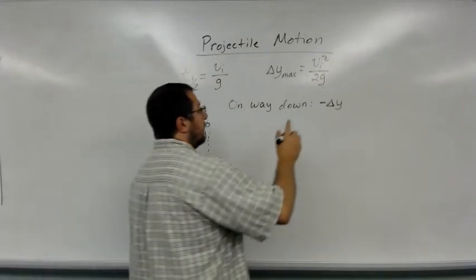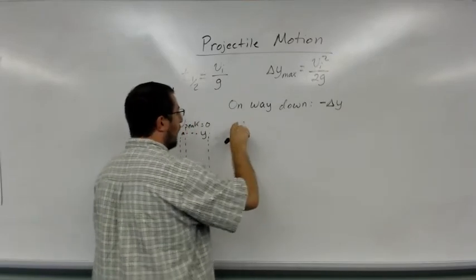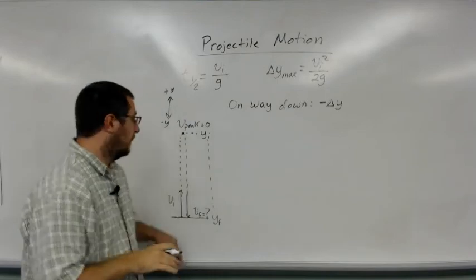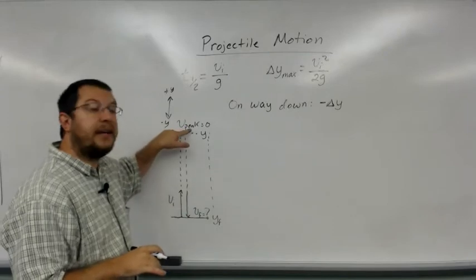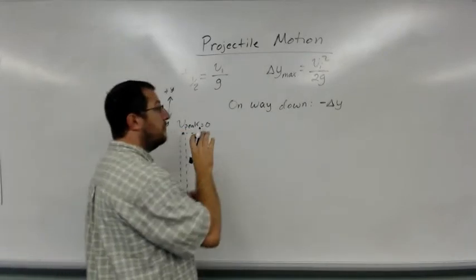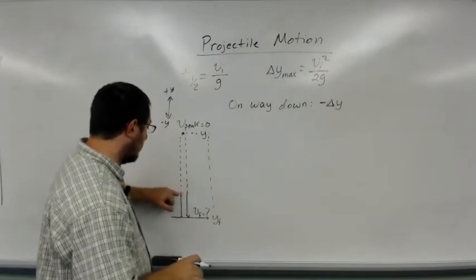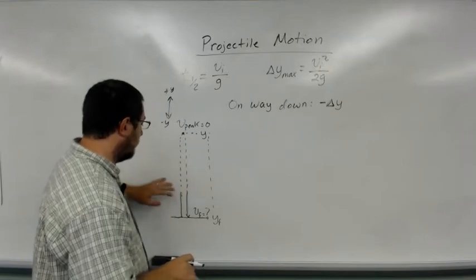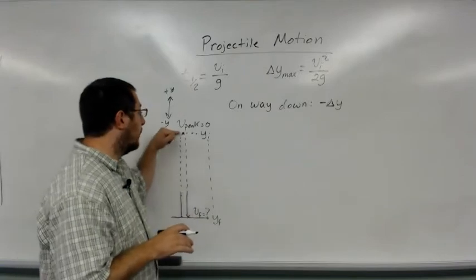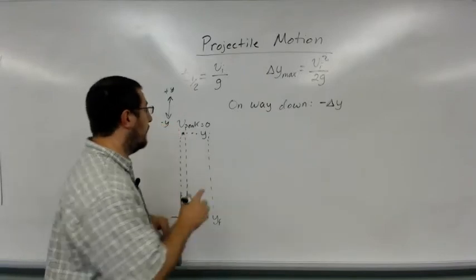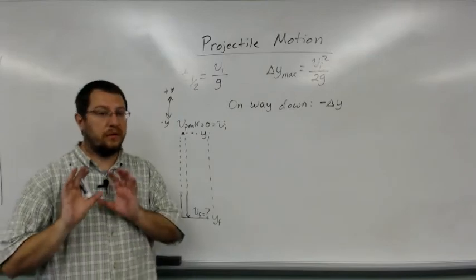Now we can use the second kinematic equation. If I'm analyzing the motion from the peak downward, then v peak is my initial velocity. We can ignore the initial velocity it was launched with. The initial velocity at the peak means our initial velocity is zero for this portion.